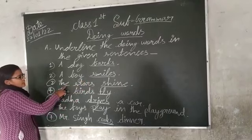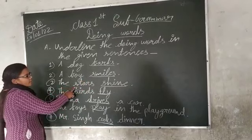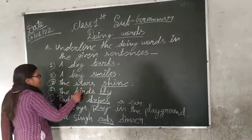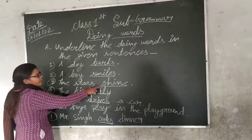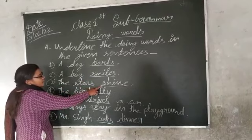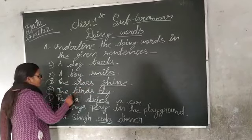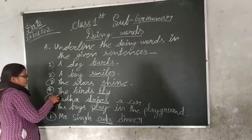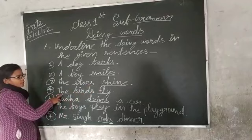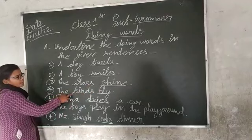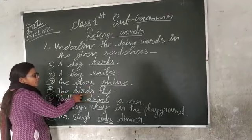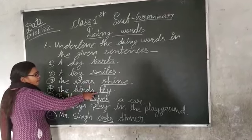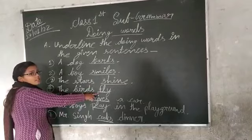The star, sign. In this line, sign is a doing word. Next, the birds fly. In this line, fly is a doing word.